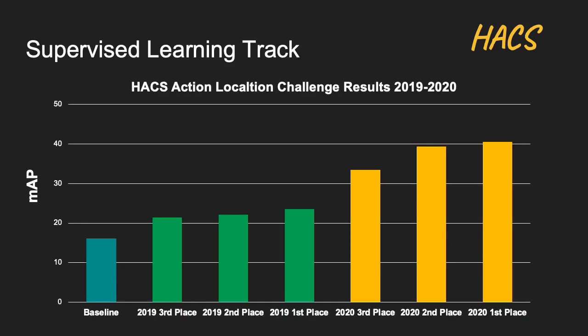Now let's move on to the results of the supervised learning track. Since we also hosted it in the 2019 HACS Challenge, we can compare performance over time. Our baseline model is called Structured Segment Networks (SSN), proposed in 2017, which achieved 16.1 mean AP on HACS Segments.